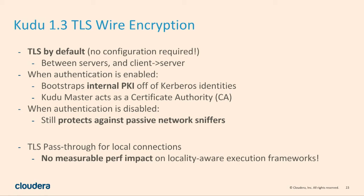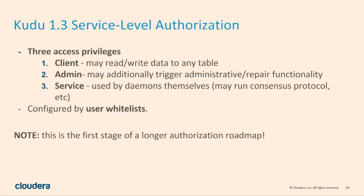This means that in most of our actual workloads — like TPC-H and TPC-DS on Impala — we don't see any overhead at all from wire encryption, which is a pretty nice property.